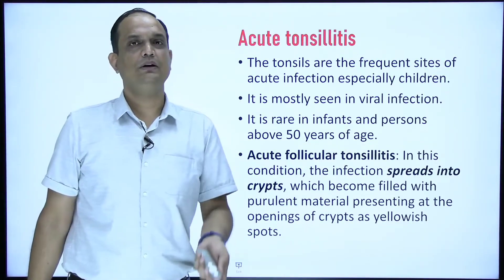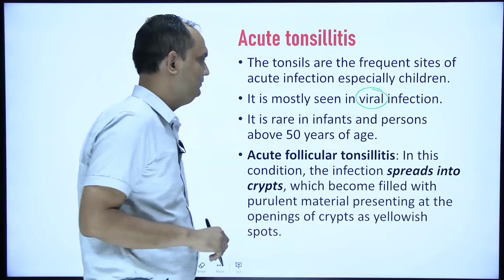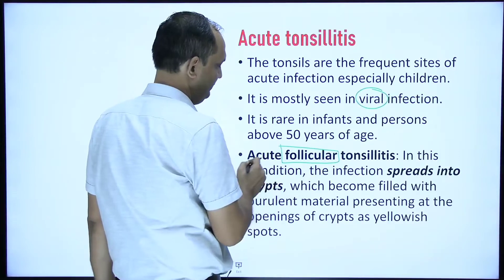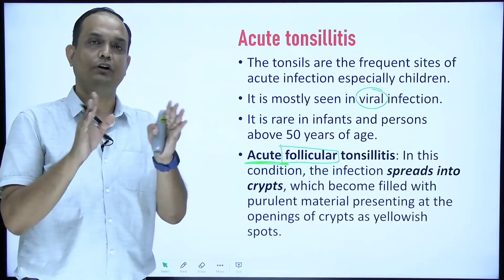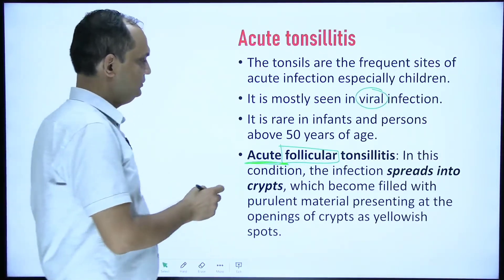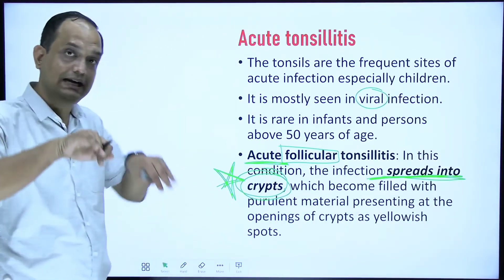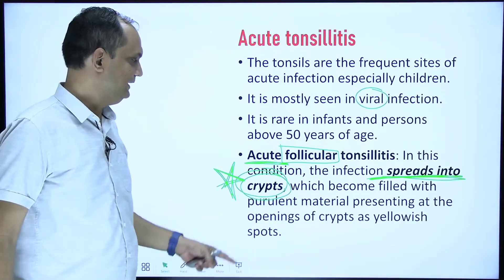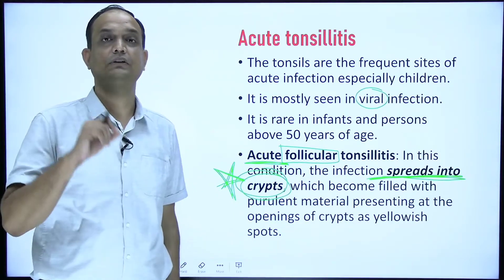For applied anatomy: the most common problem is acute tonsillitis — inflammation of the tonsil, most commonly caused by viral infection. It is rare in infants and the elderly. Follicular tonsillitis occurs when infection spreads from the outer epithelium into the crypts. Tonsillitis has three components: epithelium, crypt, and lymphoid tissue. In follicular tonsillitis, infection sets inside the crypts, which fill with purulent material presenting as yellowish spots at the crypt openings.